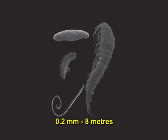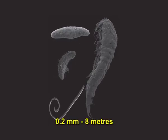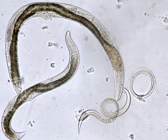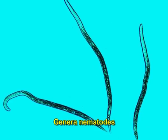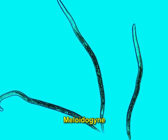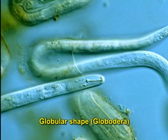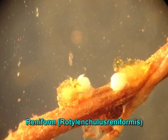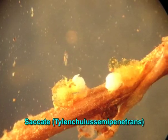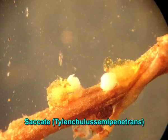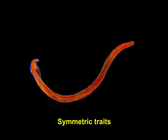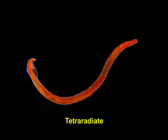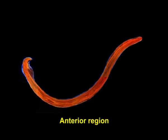They may vary in length from 0.2 mm to 8 meters, and their body width varies from 0.01 to 0.05 mm. In some genera, female nematodes on maturity may assume pear shape (e.g., Meloidogyne), globular shape (Globodera), reniform (Rotylenchulus reniformis), or saccate (Tylenchulus semipenetrans). The swelling increases the reproductive potential of the organism. Radially symmetric structures — triradiate, tetraradiate, and hexaradiate — exist in the anterior region.